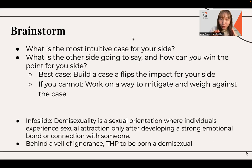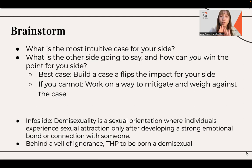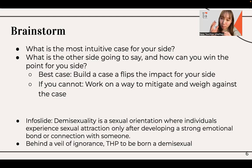Once you've read the motion and you know you understand it, the comparative, and the characterization, you move on to brainstorming. There are two things that must be done when brainstorming. The first is to think about what is the most intuitive case from your side. Most of the time, the strongest case is not the very tricky, complicated one you'd think of after five mental gymnastics — it's the idea a person on the street would think of when you ask them about the motion. Think of that, write it down, and know you have it set in stone.